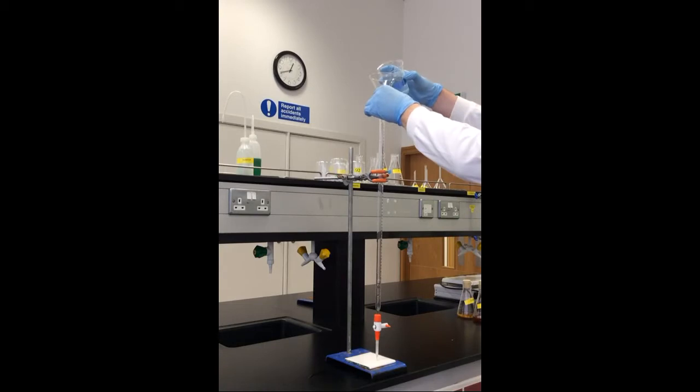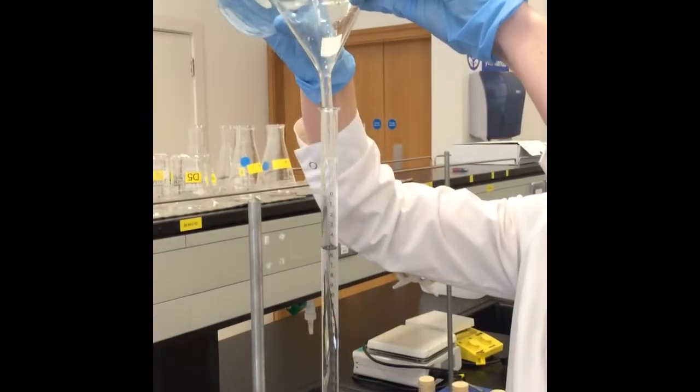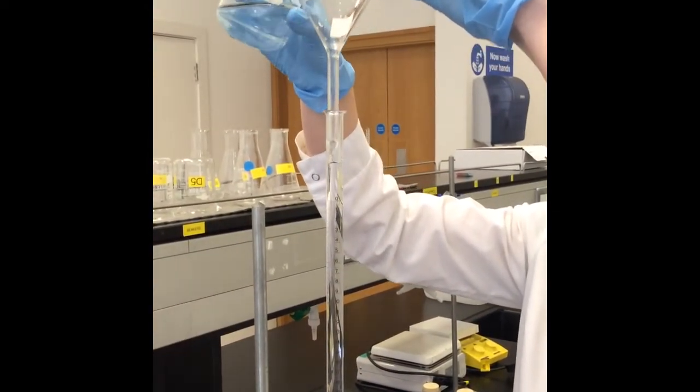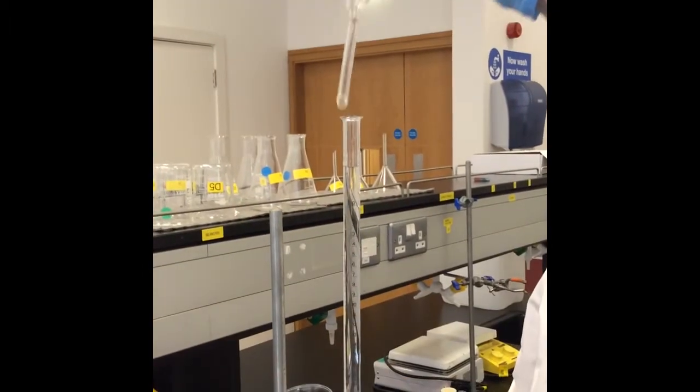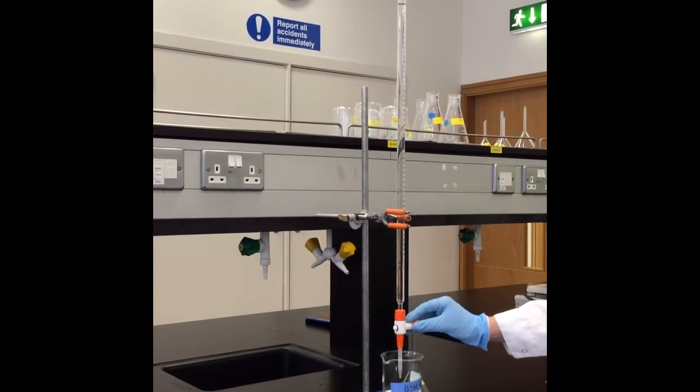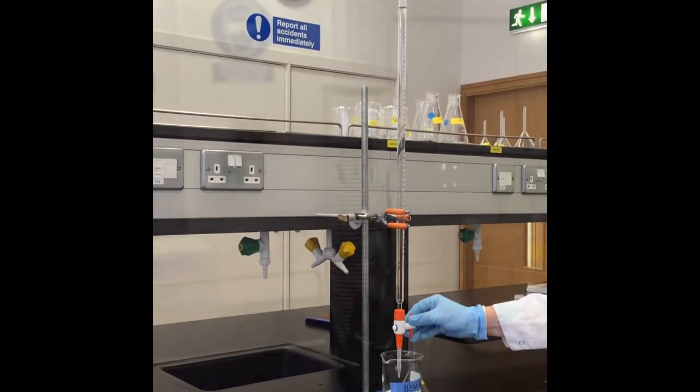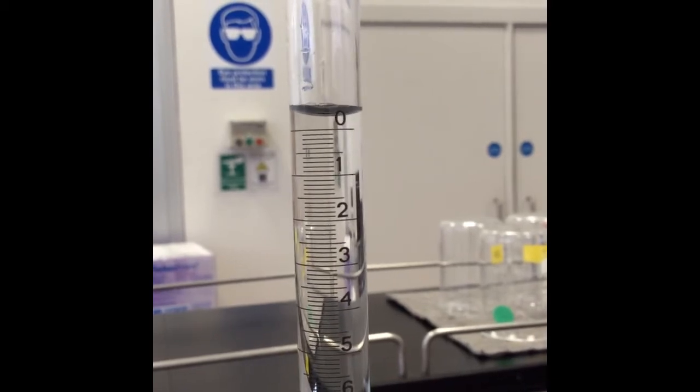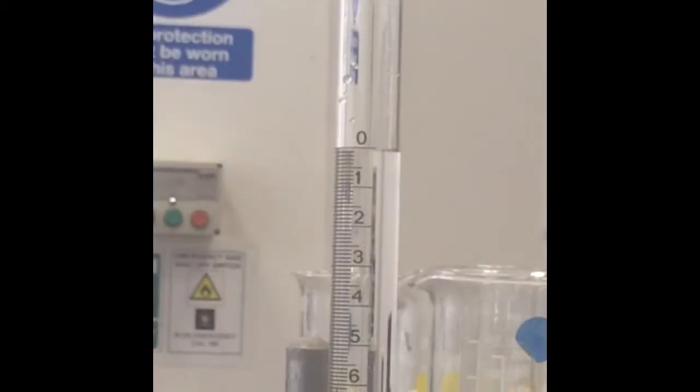0.5 molar sodium hydroxide was carefully added to the burette using a funnel. To obtain an accurate reading, the sodium hydroxide was added above the zero line on the burette. The sodium hydroxide was then carefully lowered until the zero line was reached on the bottom of the meniscus. This ensures an accurate reading for all the titrations.